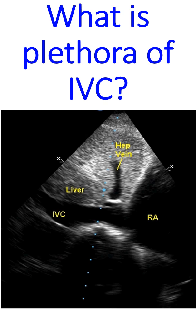While calculating the estimated right ventricular systolic pressure from the tricuspid regurgitation gradient, corrections have to be applied in cases of IVC plethora. Usually, 10 mmHg is added to the TR gradient to get RVSP. But when the IVC is grossly dilated and not showing inspiratory collapse, 20 mmHg has to be added to the TR gradient to get the final estimated right ventricular systolic pressure.